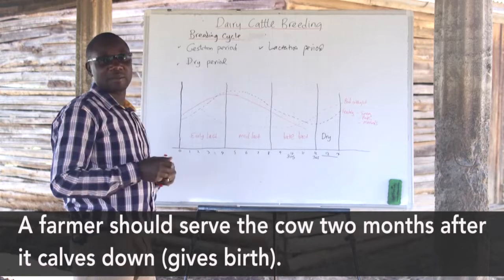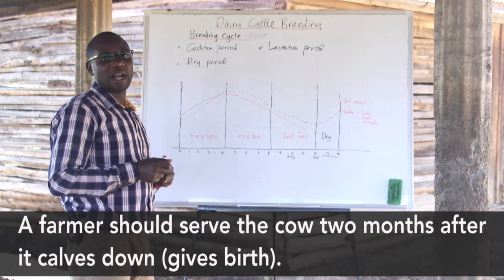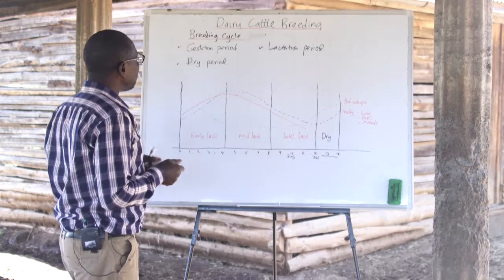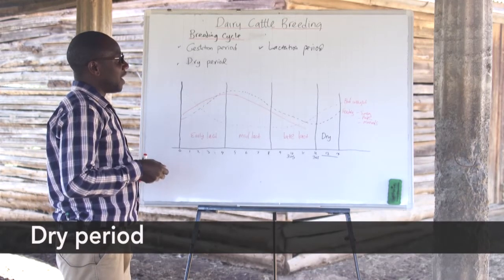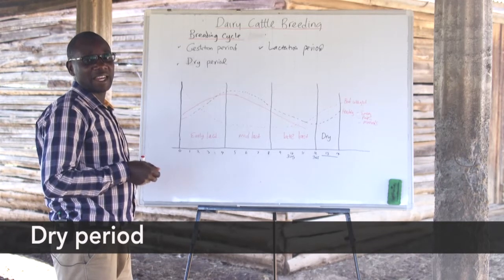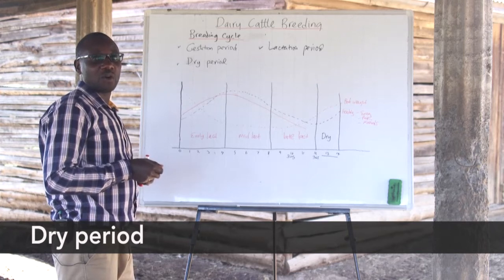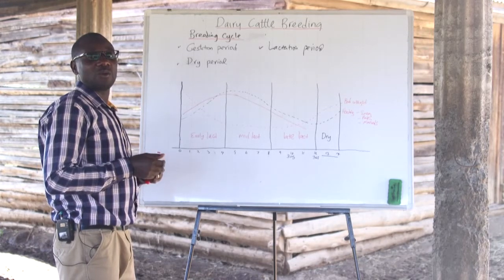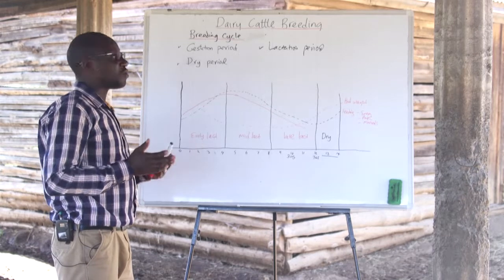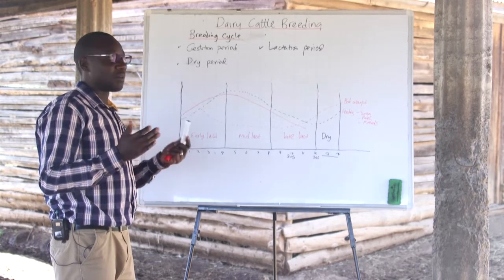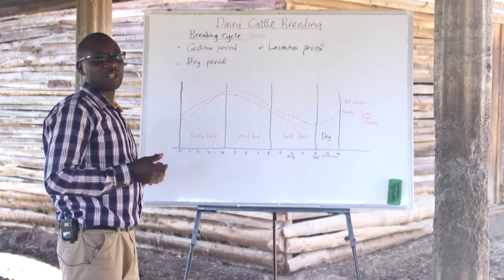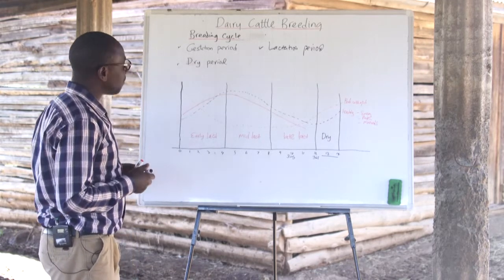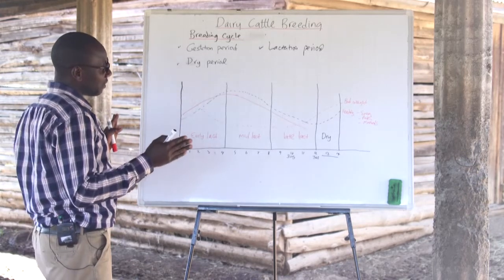Normally a farmer will serve the animal after two months from the time the animal calves down. We also have the dry period, which is the period during which the cow will remain dry before calving down. During this period, the cow rests and feeds, and it is a period used to rehabilitate the rumen so that the cow is in a position again to calve down and to start being milked.